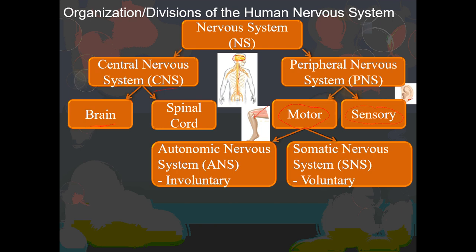For the other division, the somatic nervous system, these are the ones that are under voluntary control. Think about your muscles that are usually connected to your bones, which are called your skeletal muscles. In this picture we're talking about the leg — the hamstrings at the back and the quadriceps at the front. Those are under voluntary control, so they would be part of the somatic division of the motor system.